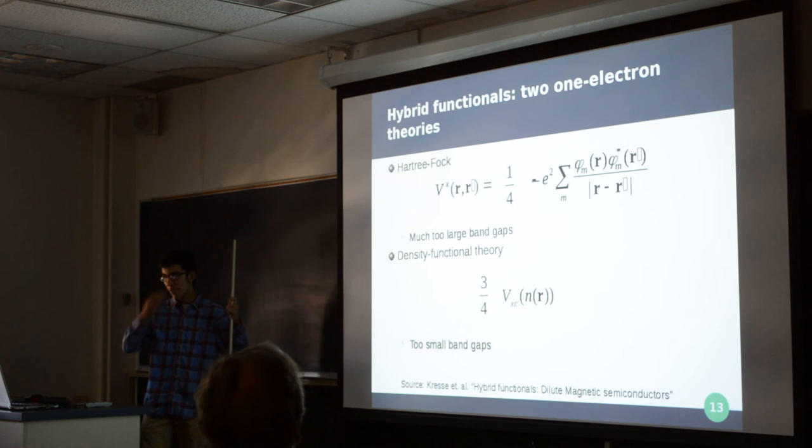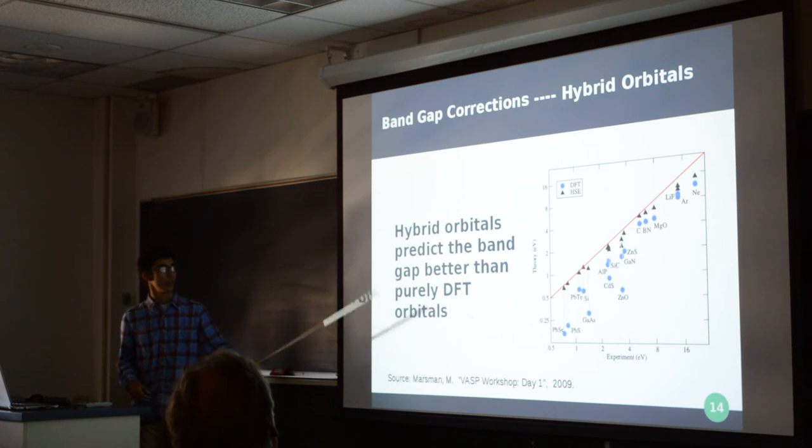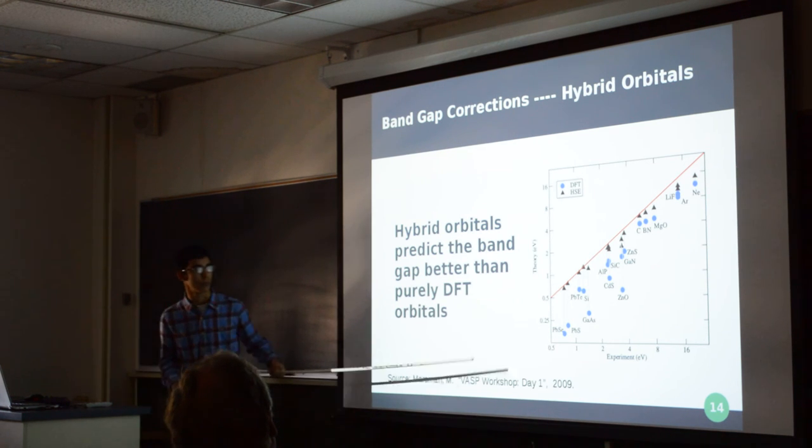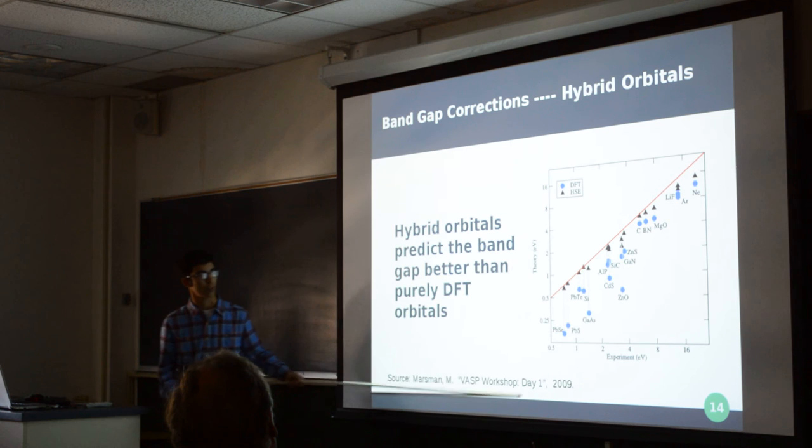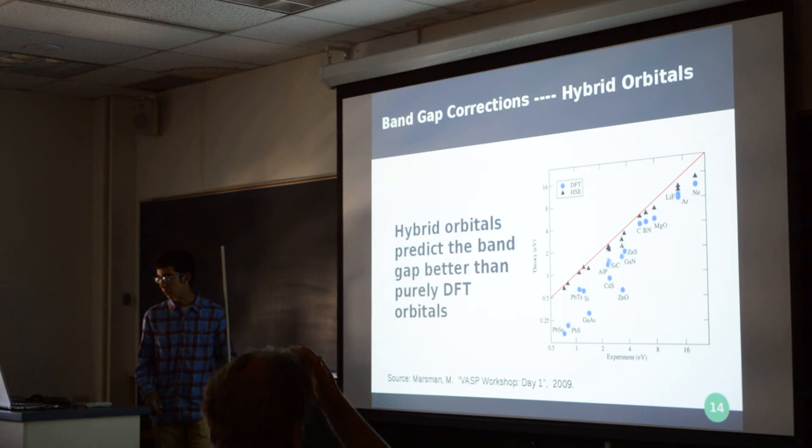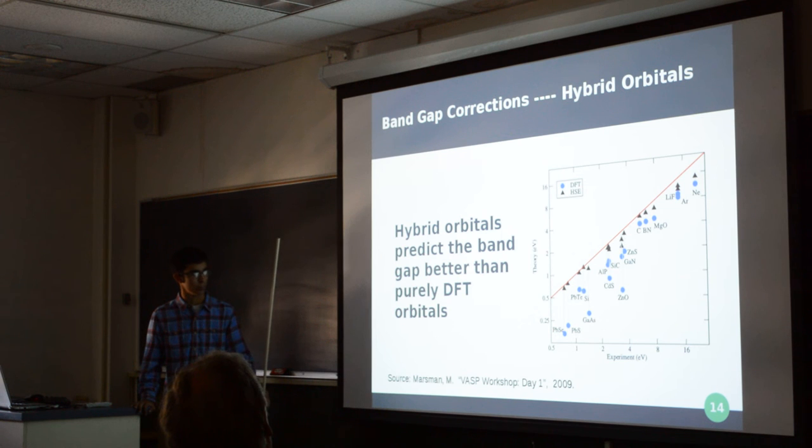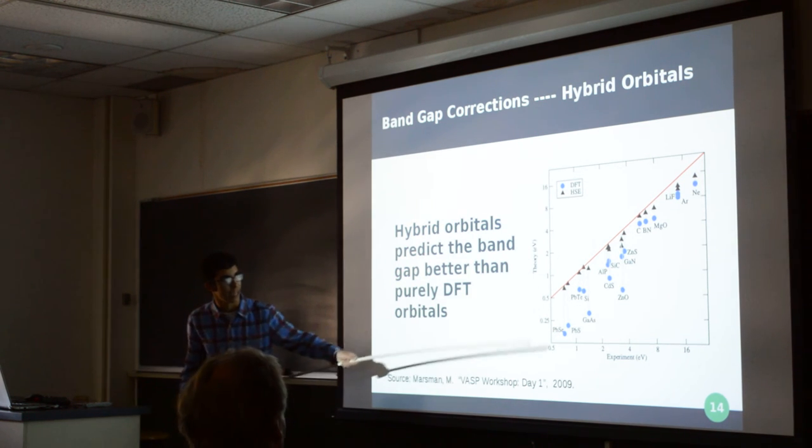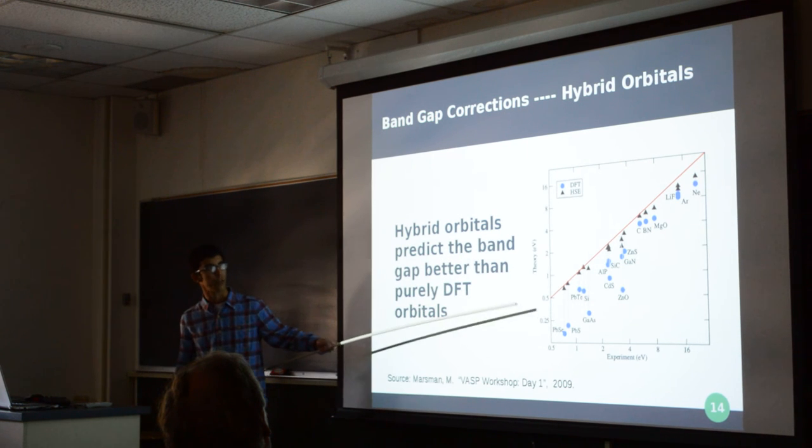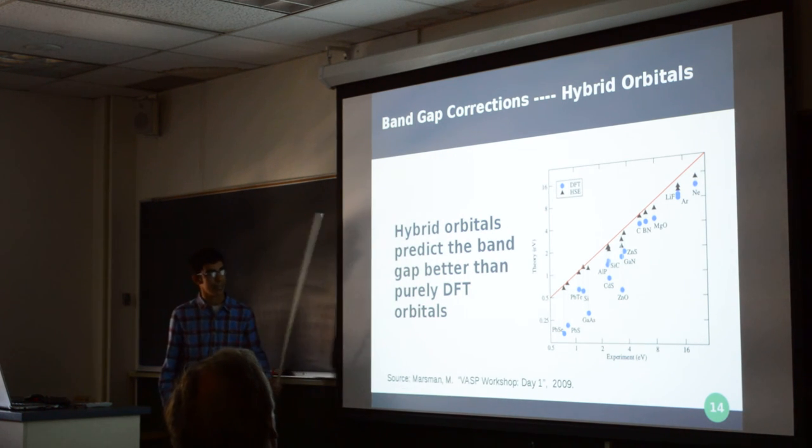Now, as a result of this we can also change another set of parameters. Which is mathematically above my head. But, as a result we can also do something called hybrid orbitals. And, as you can see by this graph, this red line represents a perfect match between experimental band gaps and theoretical band gaps. The purely DFT, which is just the exchange correlation potential, tends to have extremely small band gaps. But, this HSE here, which is a type of hybrid orbital, you can see it tends to have much better band gaps.